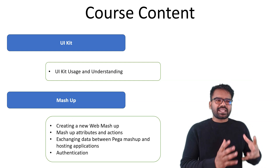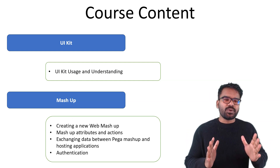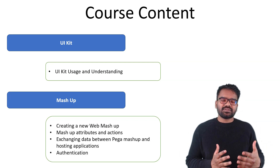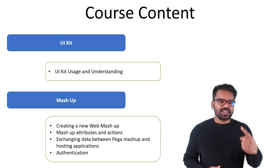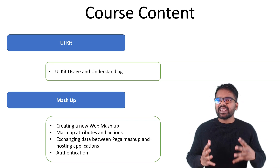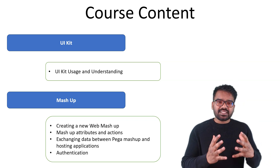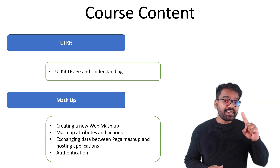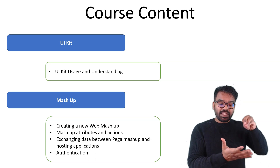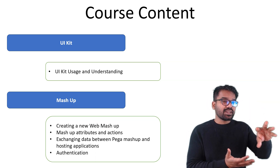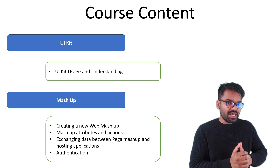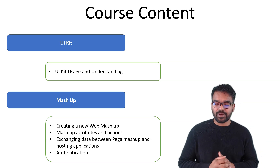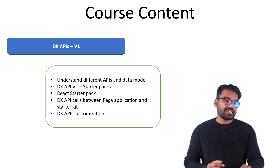I will start this course by explaining about UI kit. I have a simple lecture on UI kit and then straight away we get started with the advanced topics. The first is on Mashup, where I explain how to create a new Mashup, understand out-of-the-box attributes and different actions. One interesting lecture covers how to pass data between Pega's Mashup and an external hosting website, or the other way around, with exercises you can try out. We will also talk about authentication in Mashup.